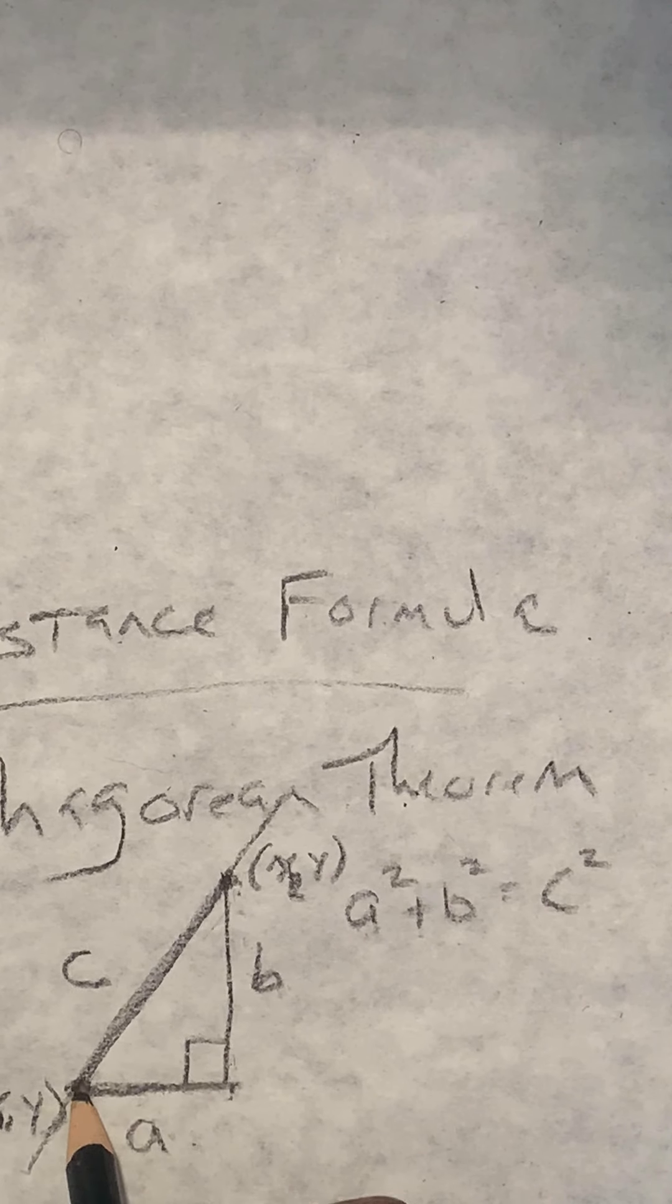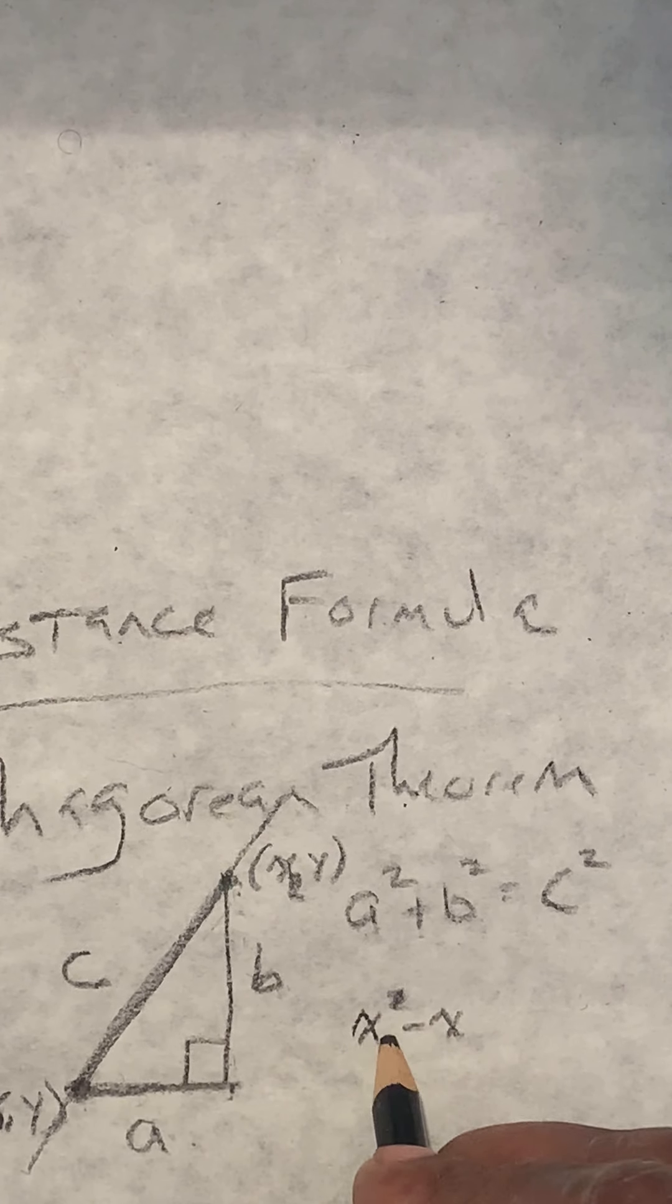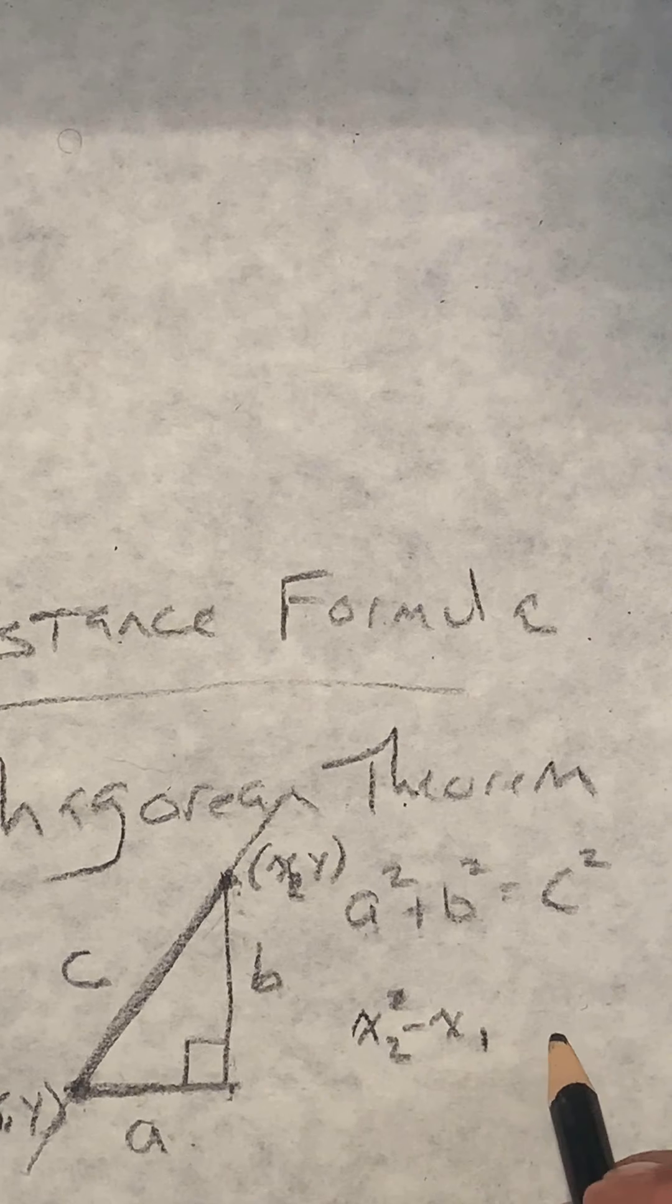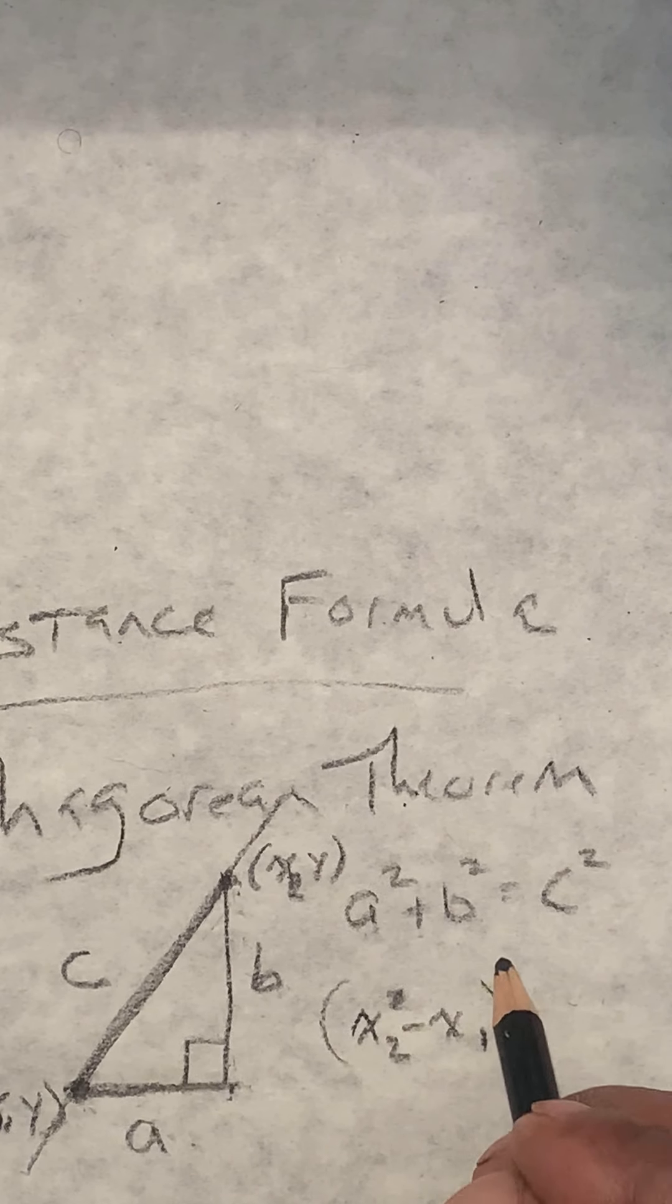So to get from X1 to X2, we know we have to subtract them, X2 minus X1. But we're going to find out what that number is, and we're going to square it.